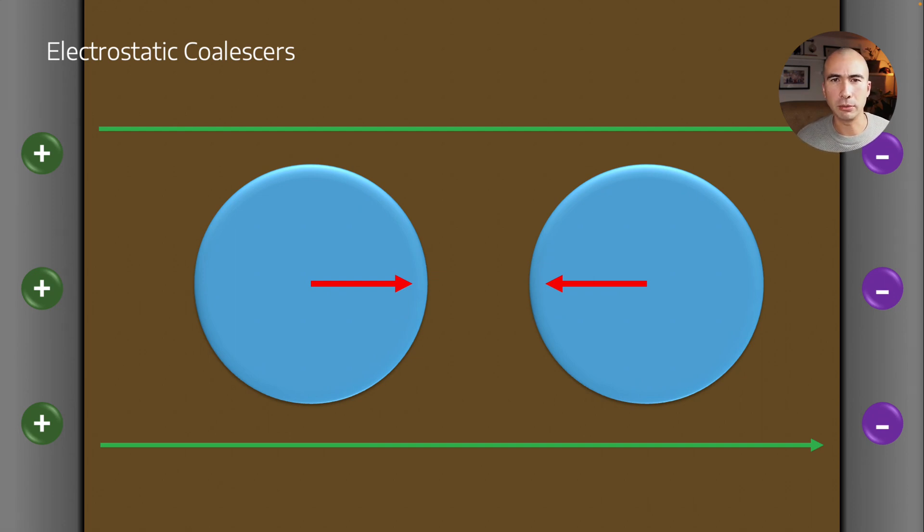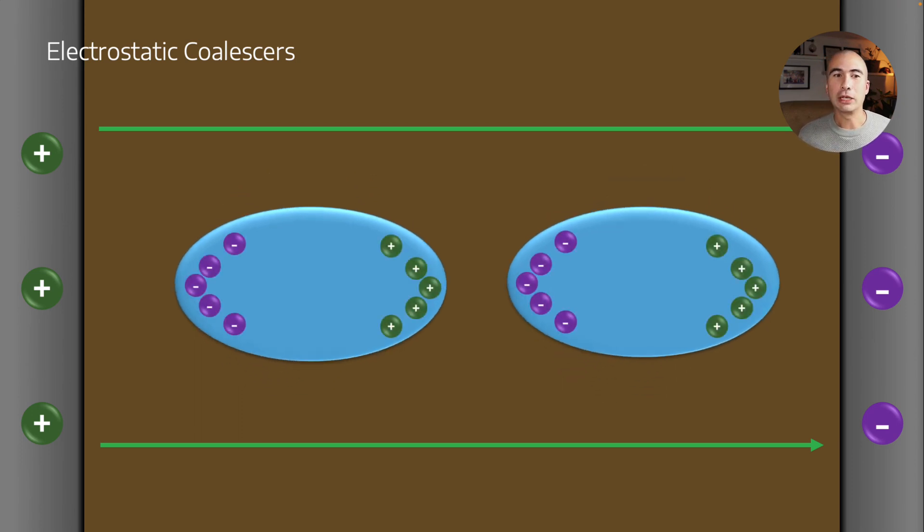So the oil isn't really going to be affected by the electric field because it's relatively non-polar. However, the water is. So it is going to end up having a sort of a negative end and a positive end, and it's going to elongate those spheres, those droplets.